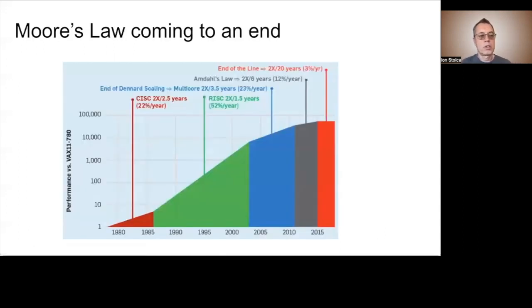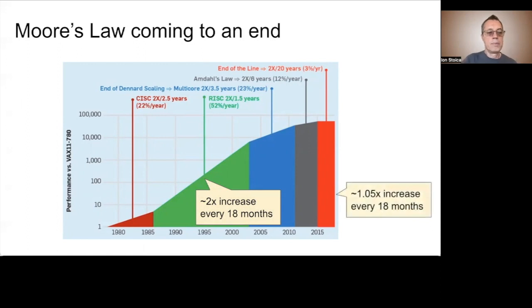Unfortunately, the Moore's law has come to an end. The green area here shows the golden age of the Moore's law, when the processor performance indeed was doubling every 18 months. Unfortunately, at the beginning of this millennium, the performance increase started to slow down. Today, per core performance improves just a few percent every 18 months.